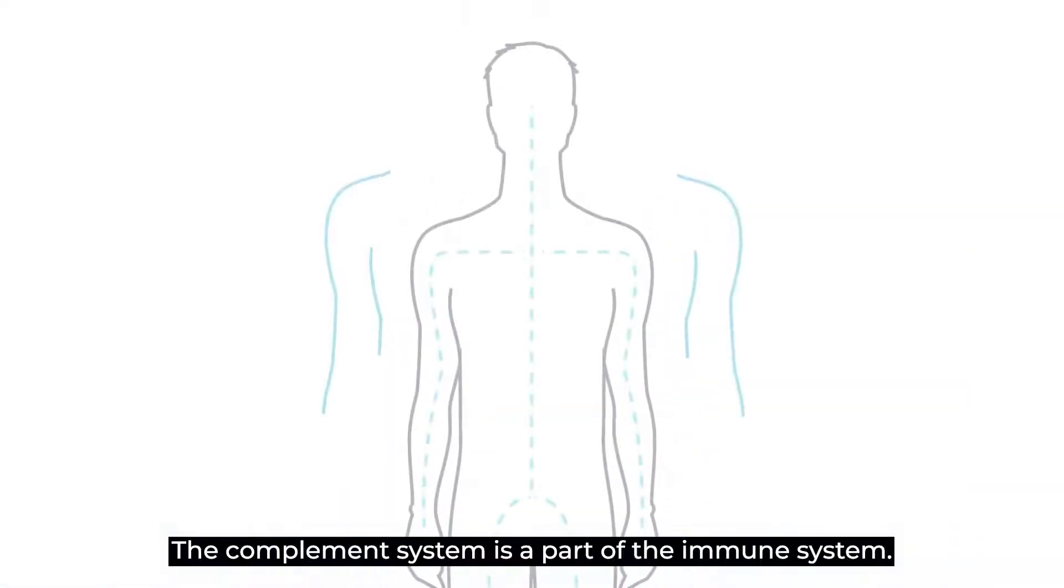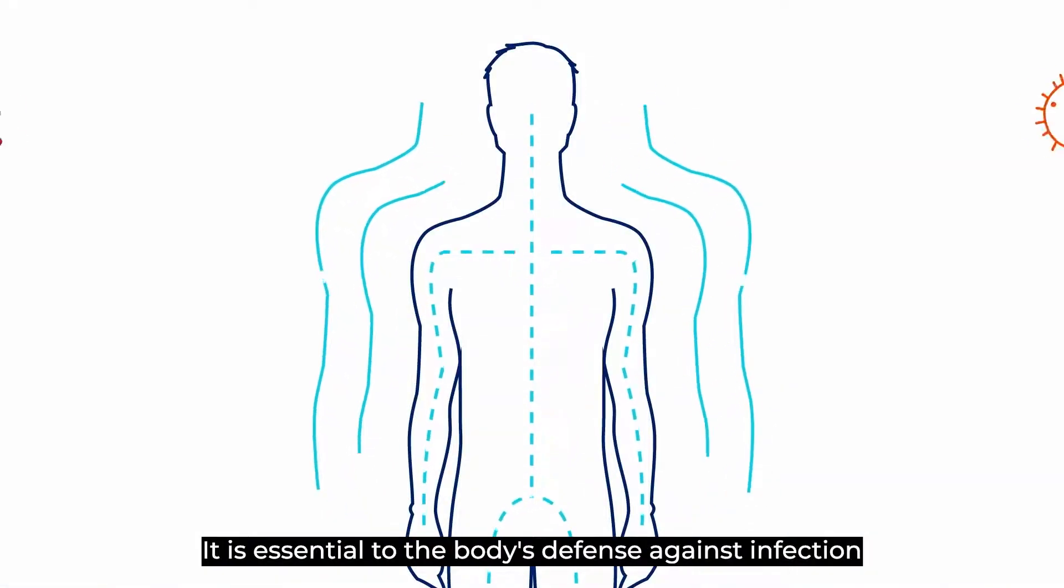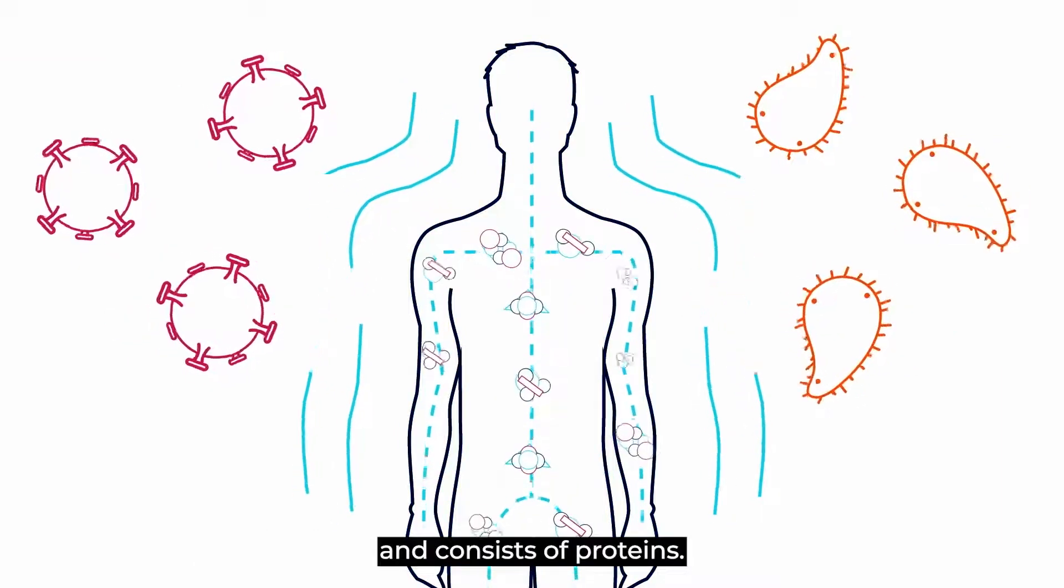The complement system is a part of the immune system. It is essential to the body's defense against infection and consists of proteins.